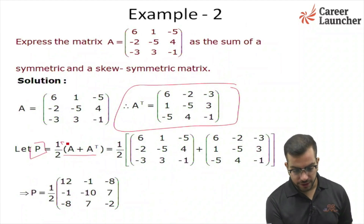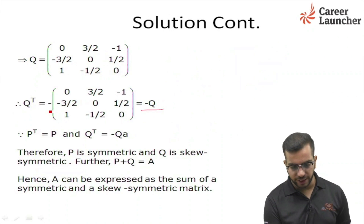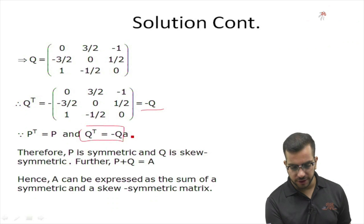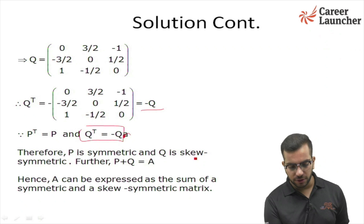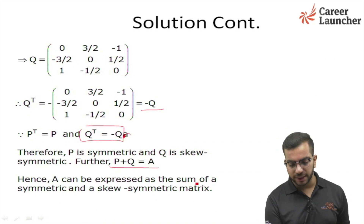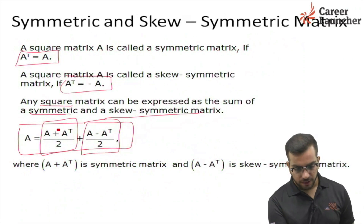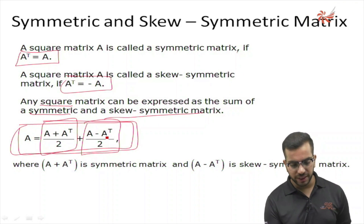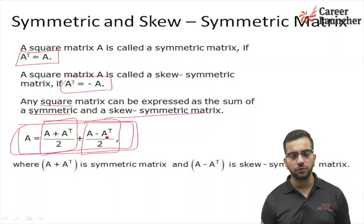Similarly, finding Q, that is (A minus A transpose) divided by 2, we get that Q transpose equals minus Q. This means this is the symmetric part and this is the skew symmetric part of matrix A. So P transpose equals P and Q transpose equals minus Q, therefore P is symmetric and Q is skew symmetric. Further, P plus Q equals A, hence A can be expressed as the sum of a symmetric and skew symmetric matrix. Remember this formula — it will be very helpful for representing a matrix A in the form of symmetric and skew symmetric parts.